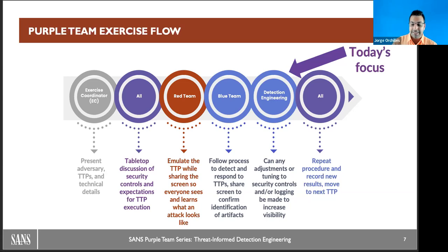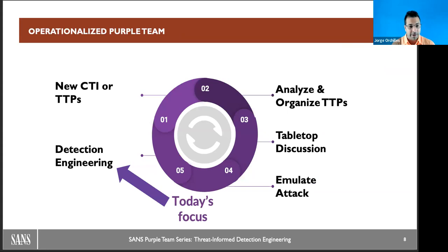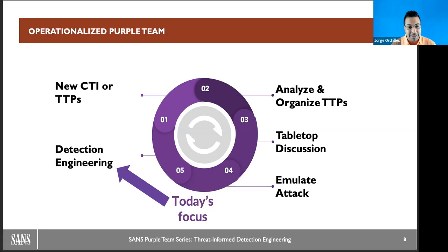In our second webcast, we covered operationalized purple teaming — you don't actually have to wait for an exercise. New cyber threat intelligence comes in or a new TTP is discovered. We analyze and organize, do a tabletop discussion, the red team emulates the attack, and then you do detection engineering to build out those data sources, make sure you have visibility, you're collecting the right things, and you're getting alerts.